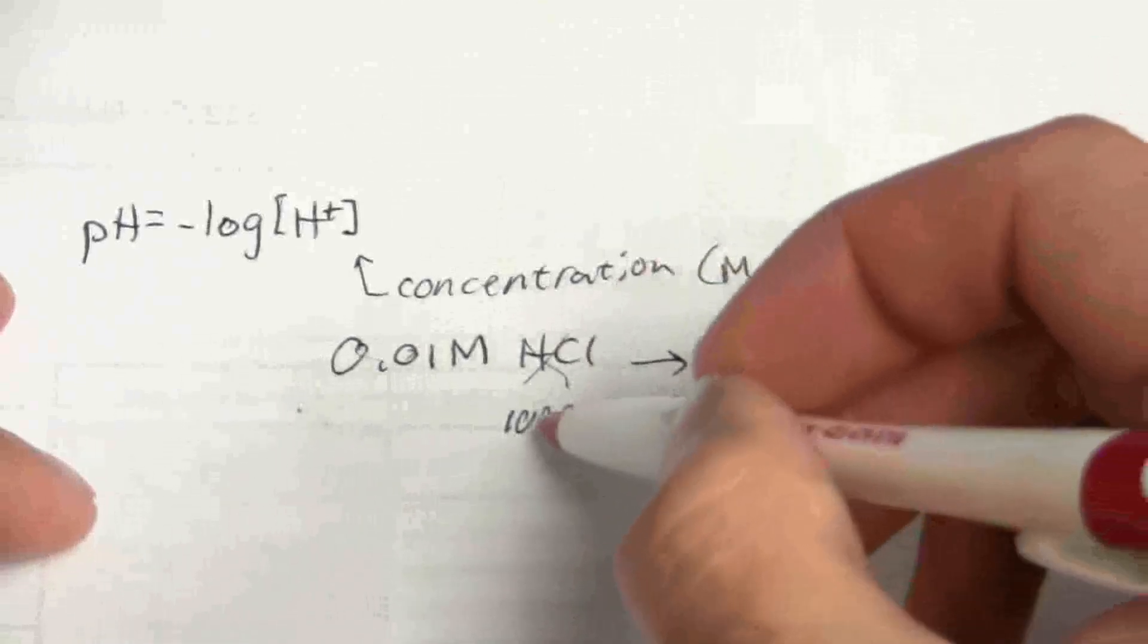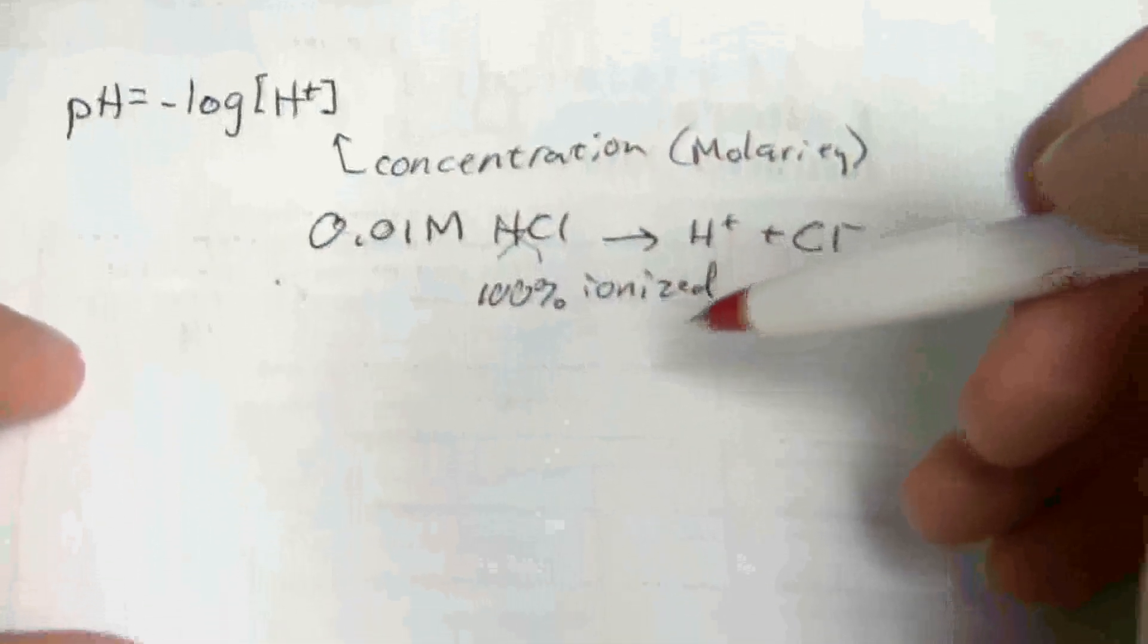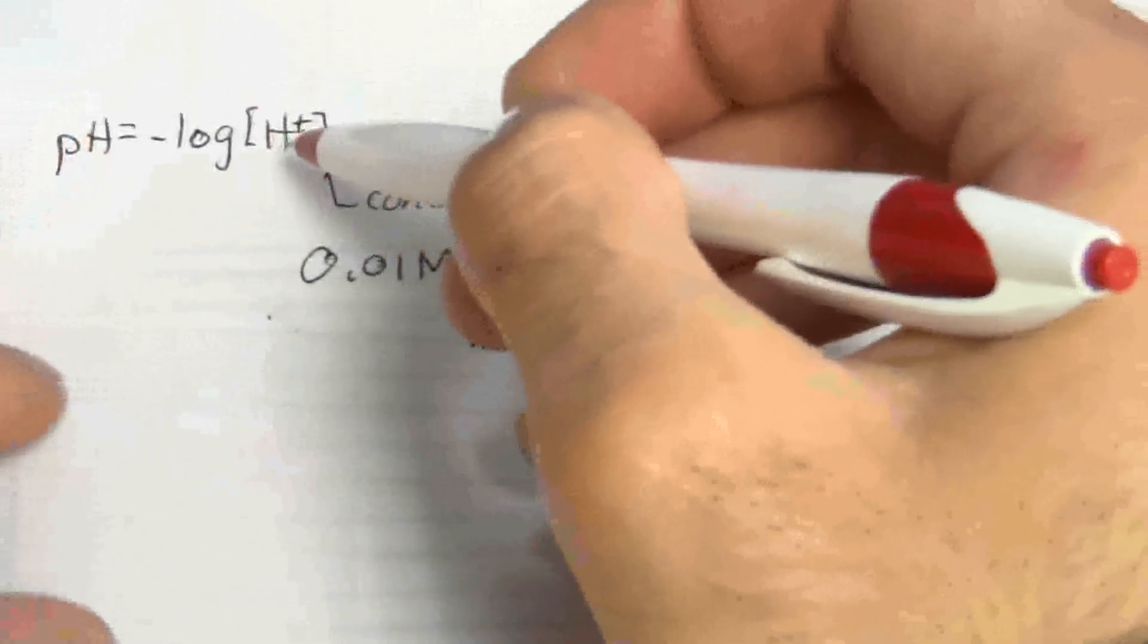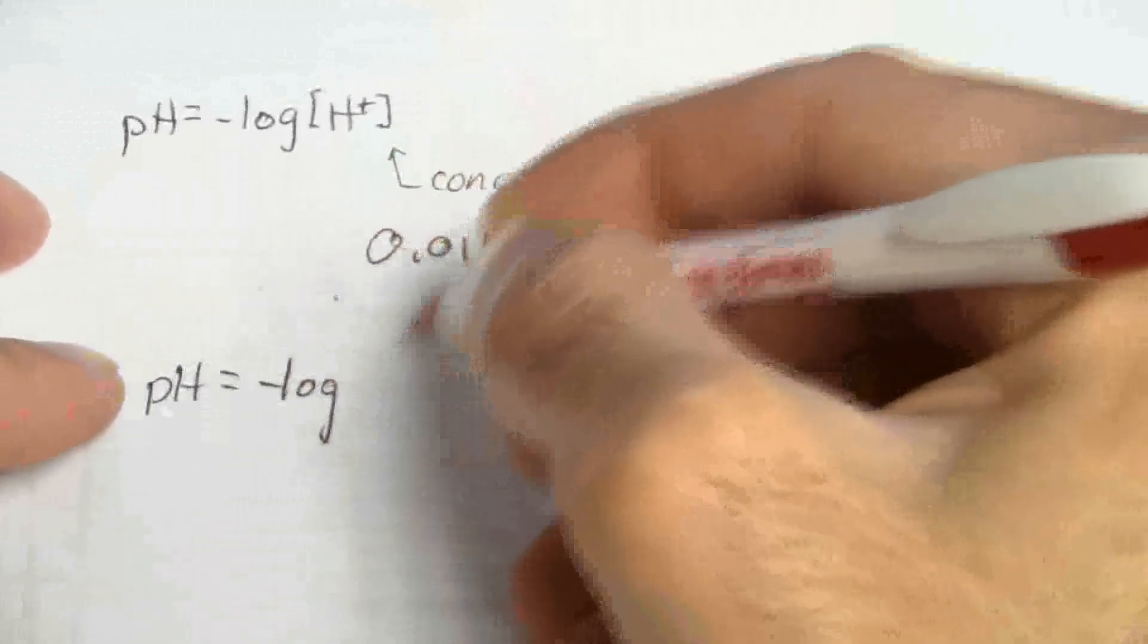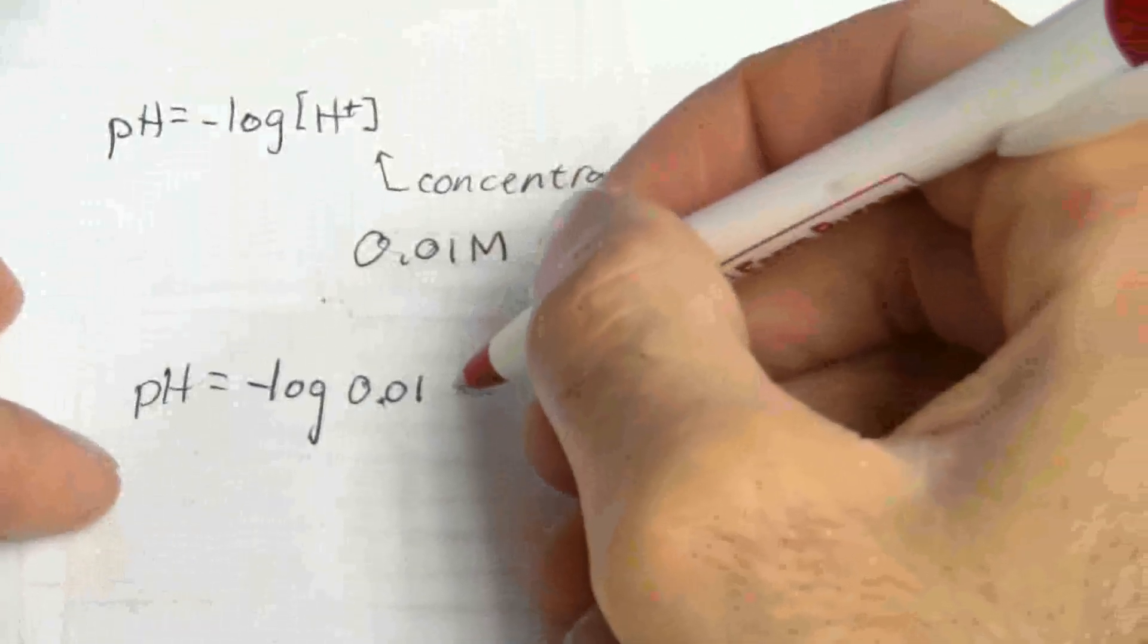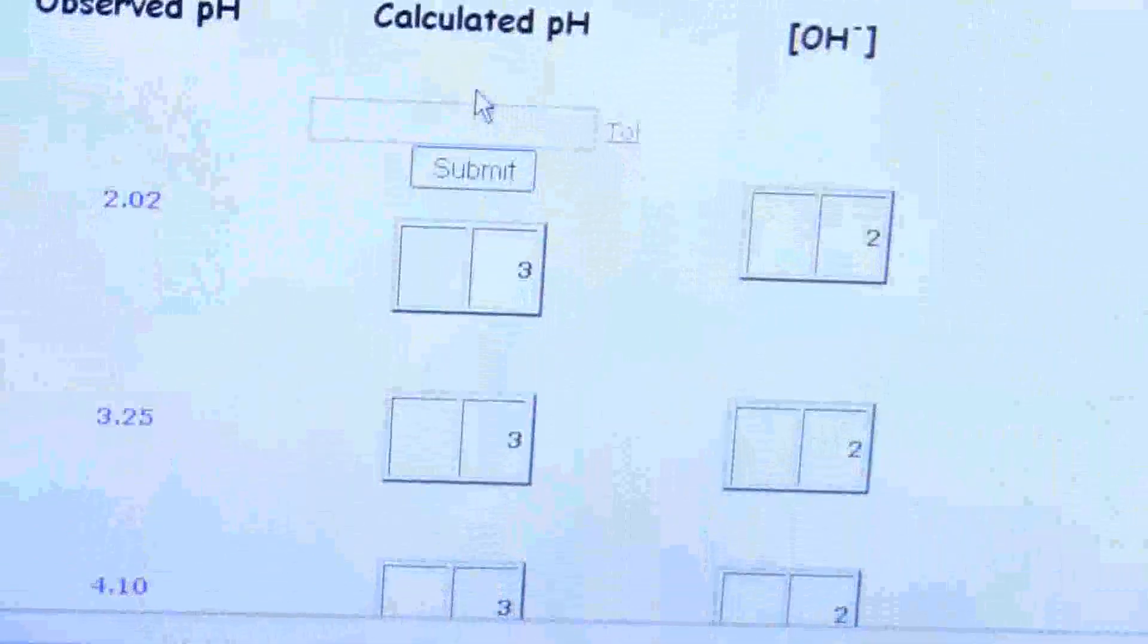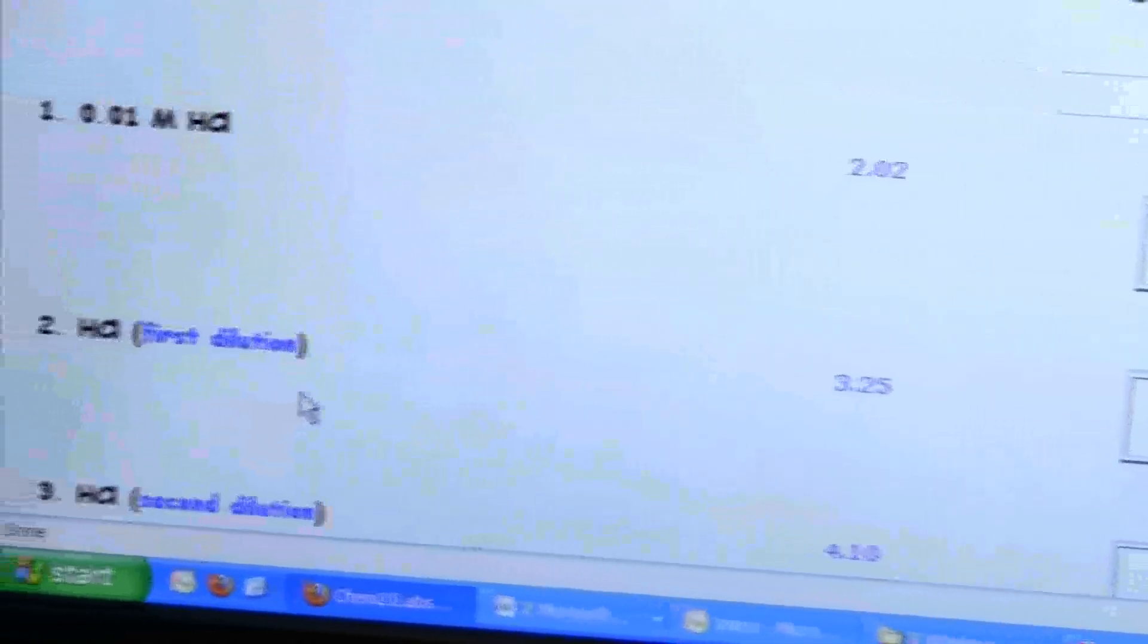So in effect because this is a strong acid, because it's a hundred percent ionized, my 0.01 molar is 0.01 molar H+. Which means that's what I'm going to use there. So to calculate the pH, it's going to be the negative log of the H+ concentration, which is 0.01 molar. So the negative log of 0.01 is what? If you know something about logs, you might be able to answer this question. But let's assume we don't.